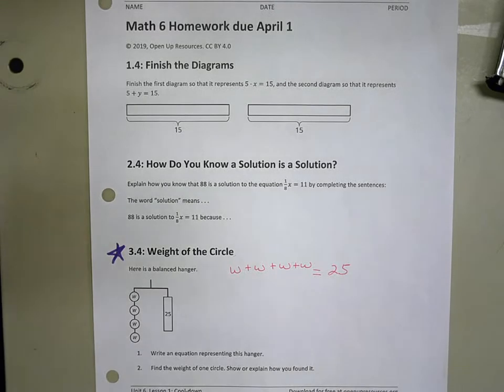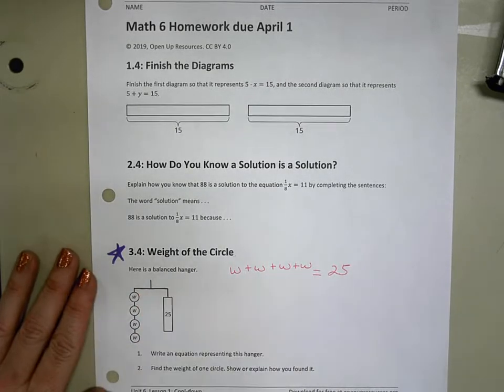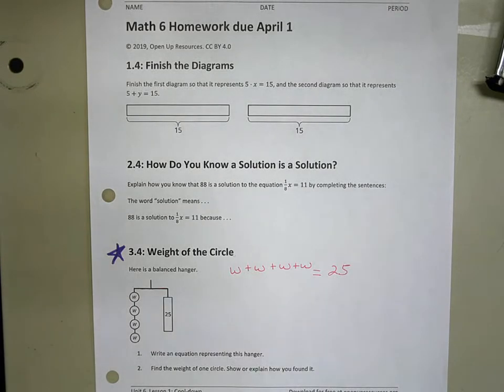And I know they are equal because the hanger is balanced. If they were unequal, we would have a tilt one way or the other.